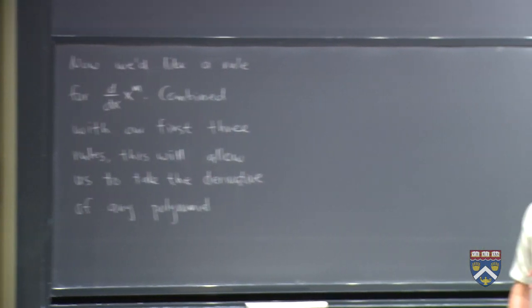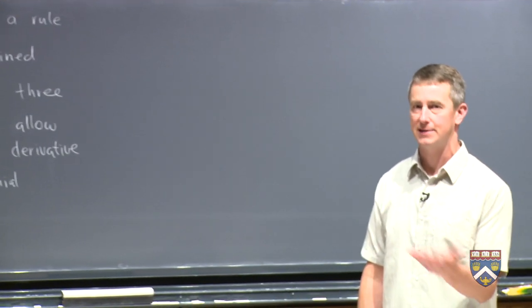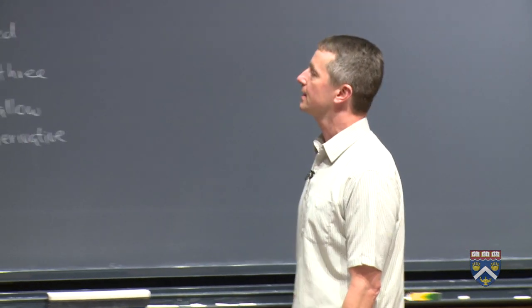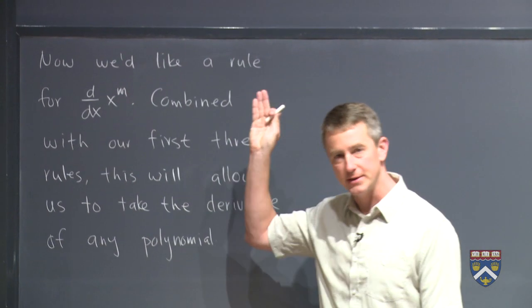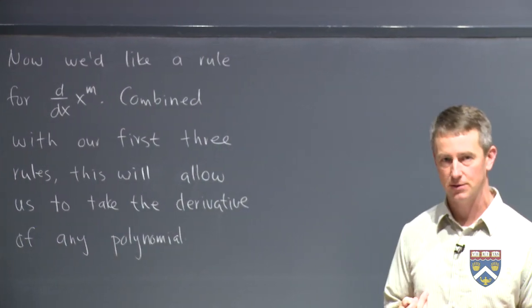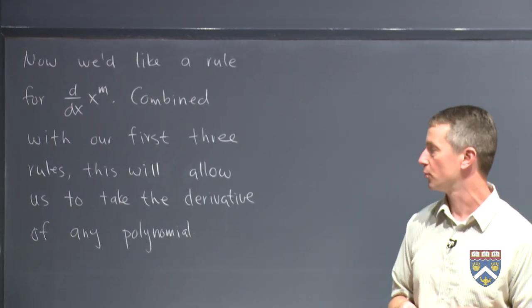In class, we did x squared. On the homework, you did x cubed. In class, we did something with a square root. We've done a variety of these. So if we had this rule, and the first three rules that we just came up up there, namely the constant rule, the sum rule, and the constant multiple rule,